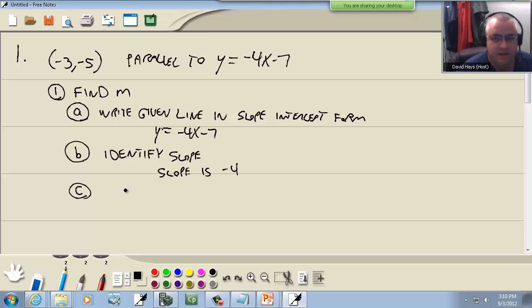And then our third sub-step: parallel lines have the same slope. They told us that it's parallel to this line, and we found the slope of that line. Parallel lines have the same slope, so M is equal to negative 4.